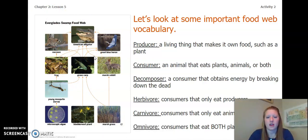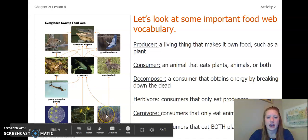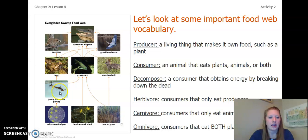A decomposer is a consumer that obtains energy by breaking down the dead. I do not see any decomposers in this image, but remember they're things like bacteria or mushrooms. A herbivore is a consumer that only eats producers or plants. So in this case, our herbivores are a rabbit, grass carp, and a young mosquito larva.